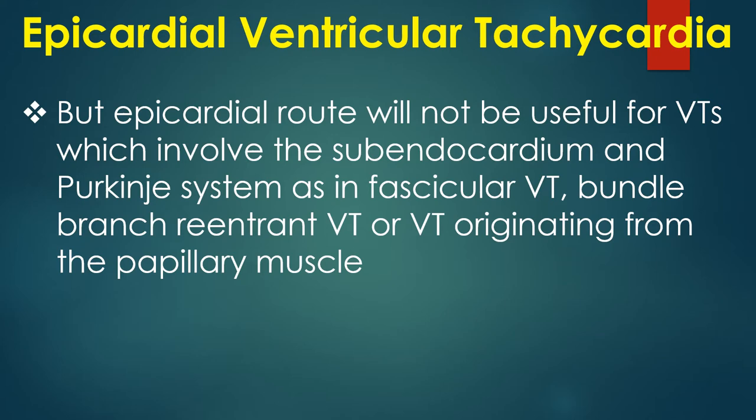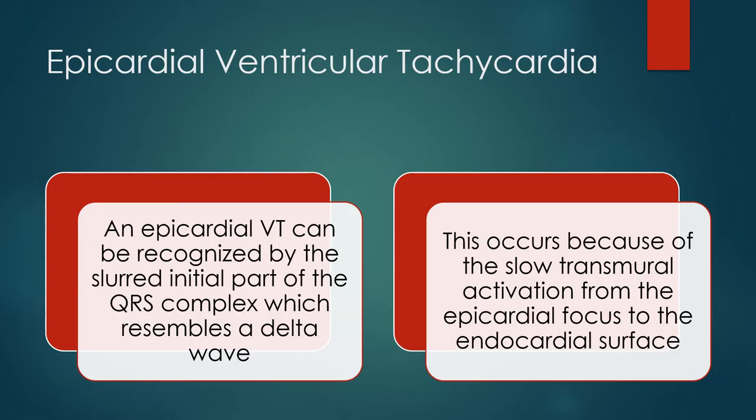The epicardial route will not be useful for VTs which involve the subendocardium and Purkinje system, as in fascicular VT, bundle branch reentrant VT, or VT originating from the papillary muscle. An epicardial VT can be recognised by the slurred initial part of the QRS complex, which resembles a delta wave. This occurs because of slow transmural activation from the epicardial focus to the endocardial surface.